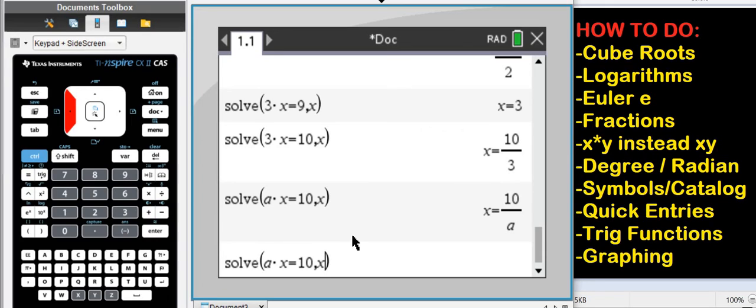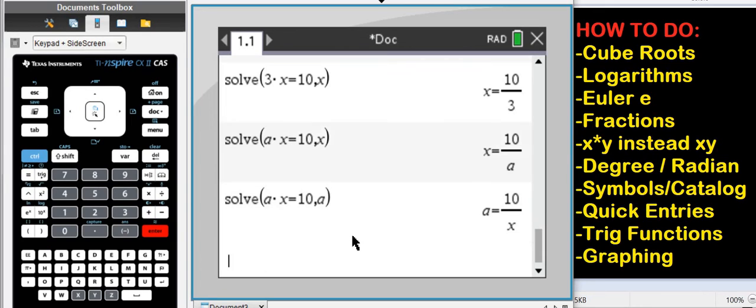And it gets even better. If I don't want to solve for x, but for a, I can do that too. It gives me a is 10 over x.